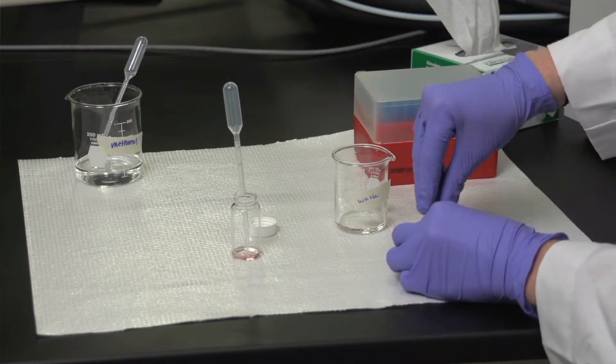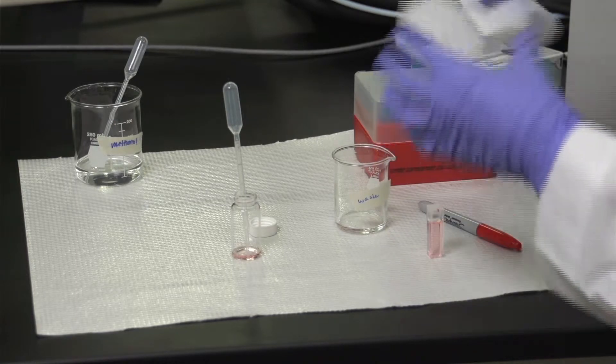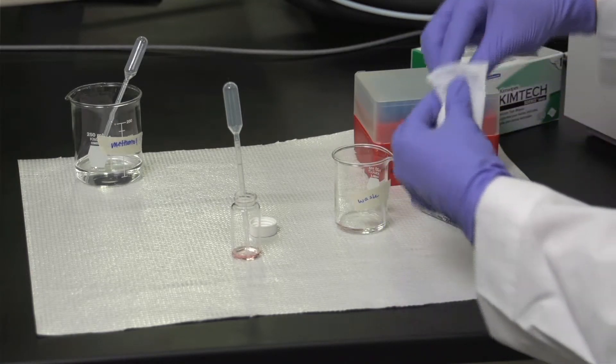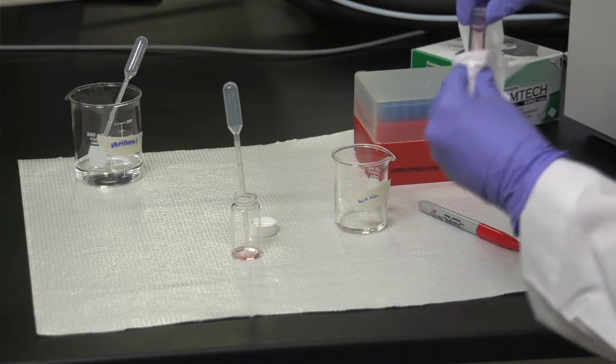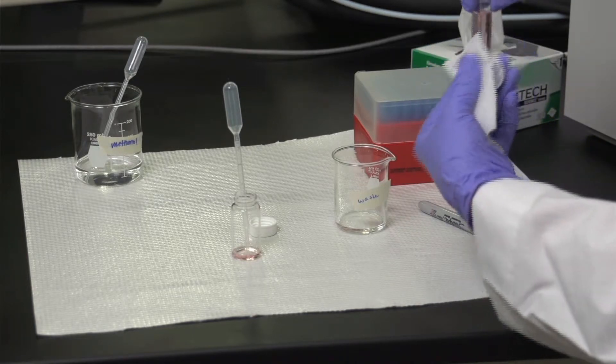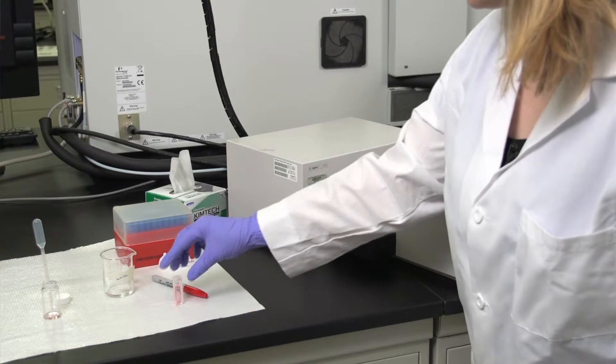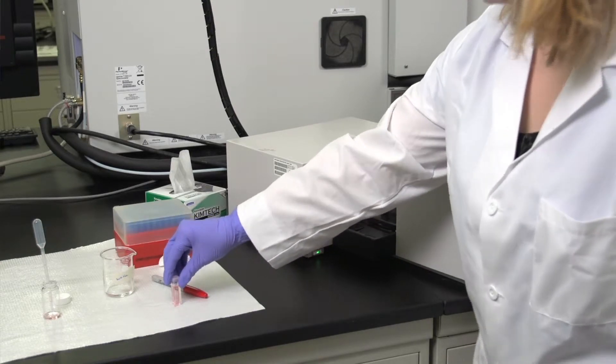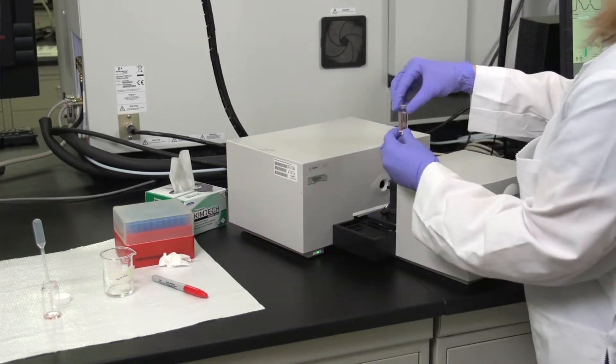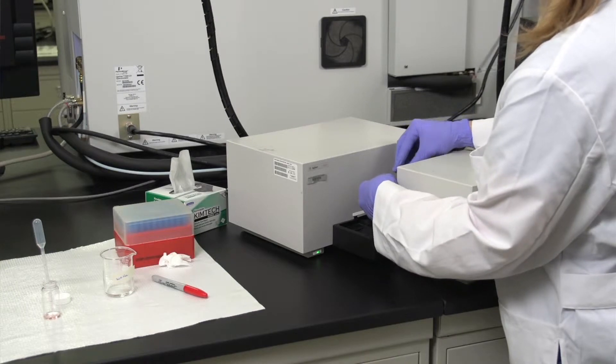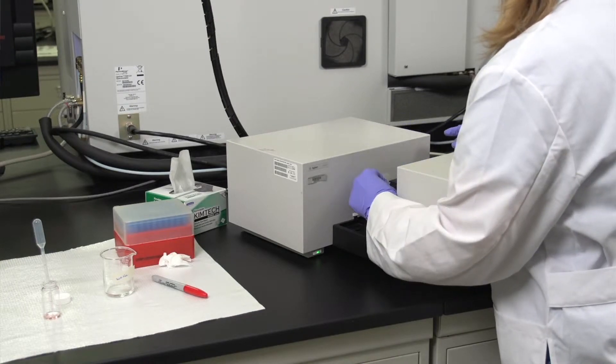Replace the cap on the cuvette. And then using a chem wipe, you'll want to wipe the outside from any impurities that could interfere with our spectrum collection. Return the cuvette to the sample compartment and ensure that the dot that you made with the marker is in the same orientation as before. And press the arm down to lock it into place.